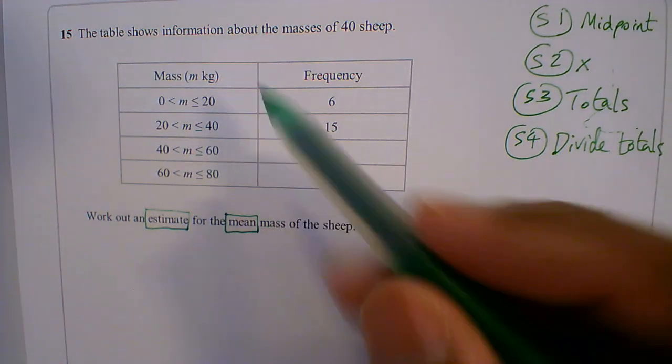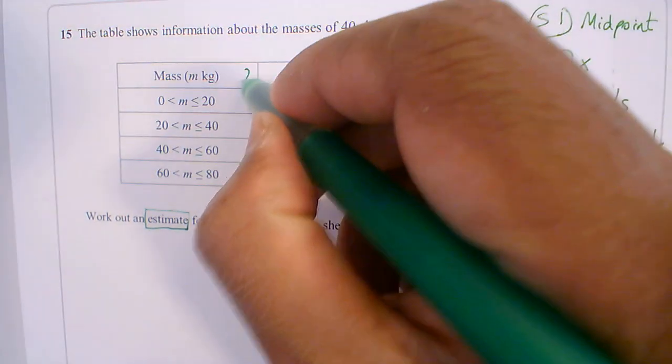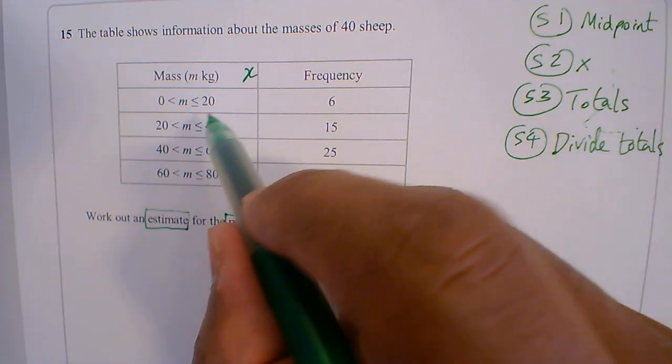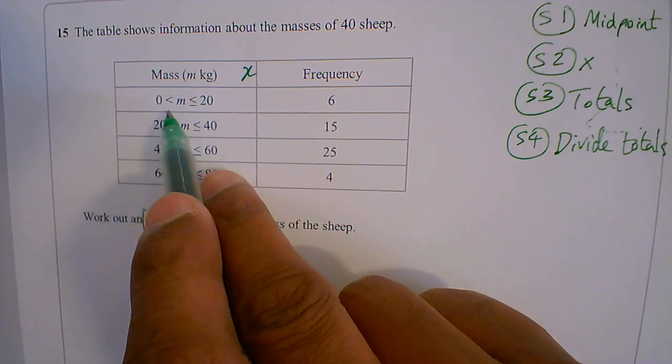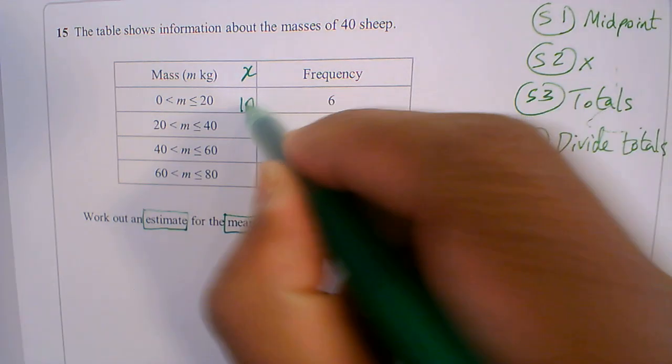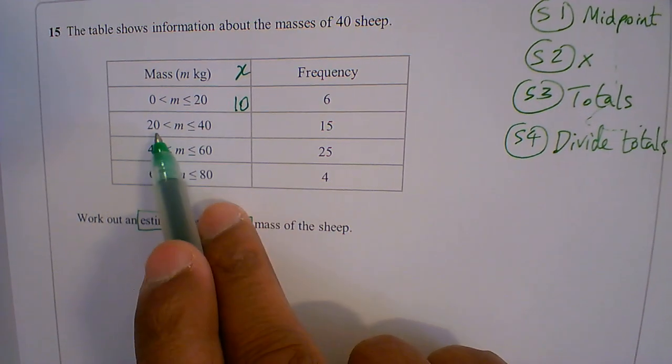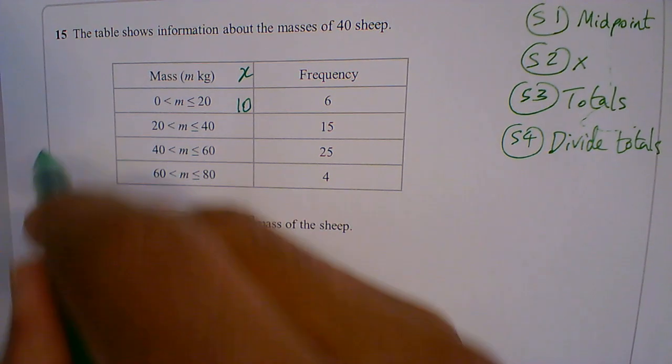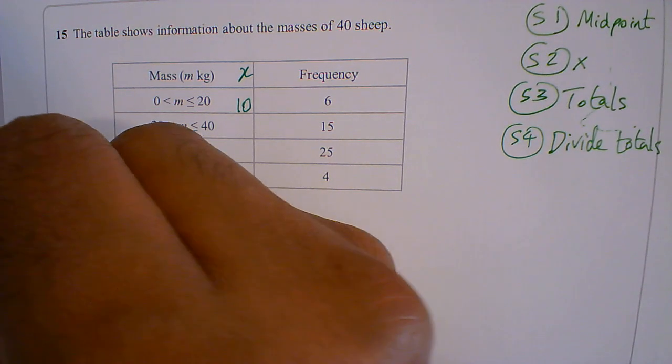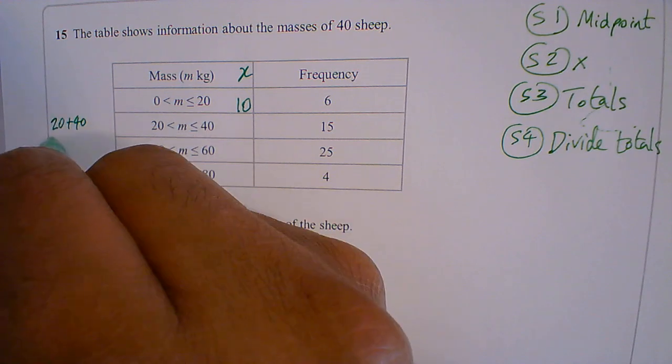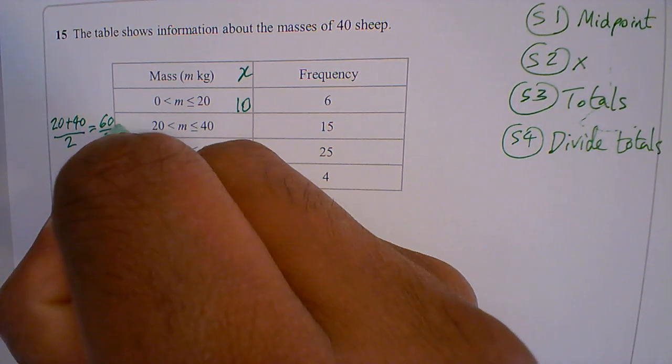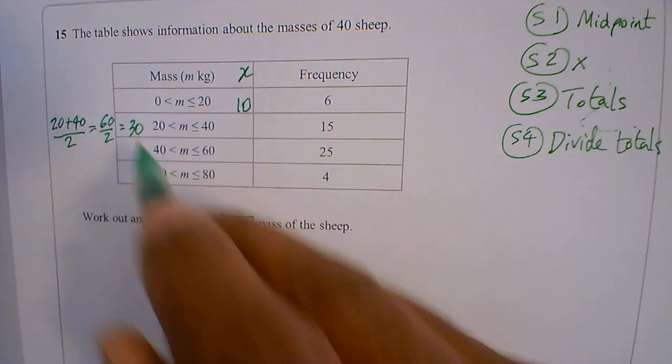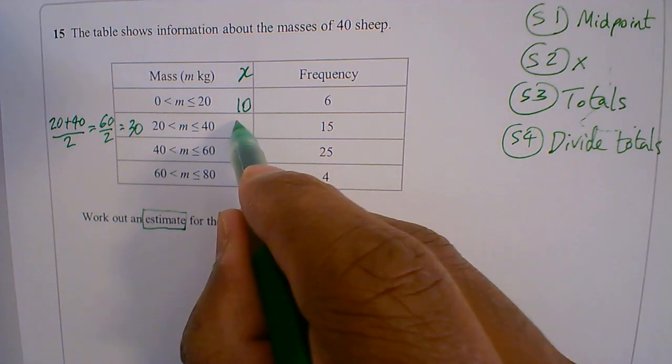So let's see how we do this. So step 1 is to find the midpoint, so we call this x. What's in the middle of 0 and 20? You can do it just by looking. The middle of 0 and 20 is 10. If you can't do it by looking, you can add them together, 20 plus 40, and then we divide it by 2. 20 plus 40 is 60, divided by 2 gives us 30. So my midpoint here is 30.